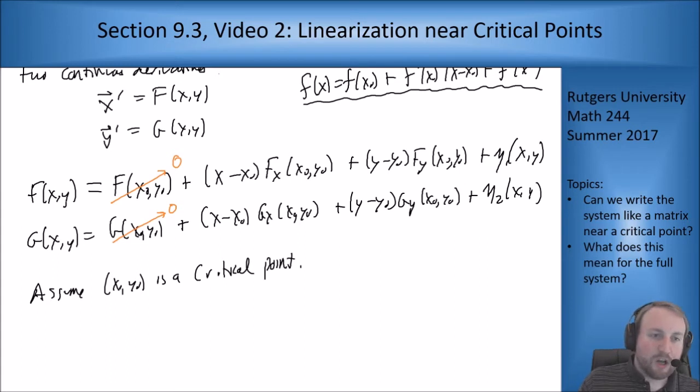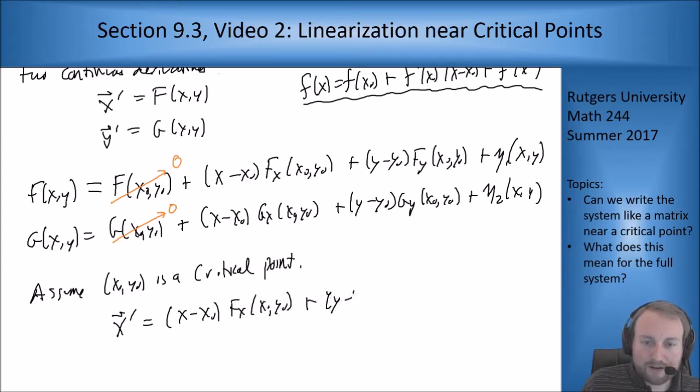Those both vanish which means if I plug this back in for my f, I'm left with x' = (x-x₀)f_x(x₀,y₀) plus (y-y₀)f_y(x₀,y₀) plus η₁(x,y), and similarly for y. Now this part looks a lot like matrix multiplication.